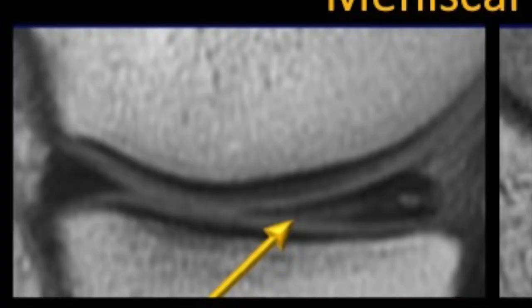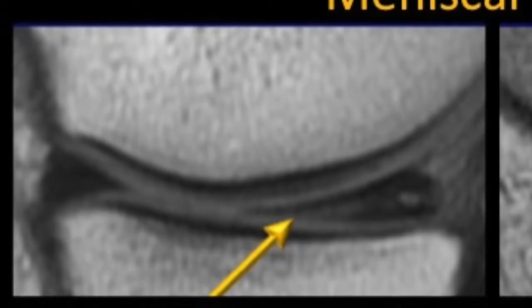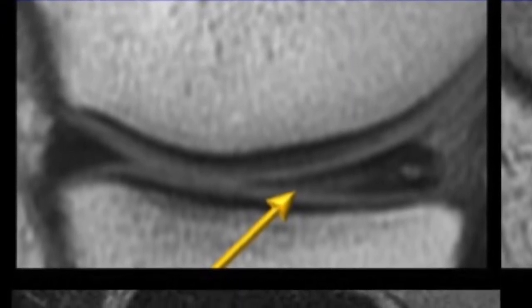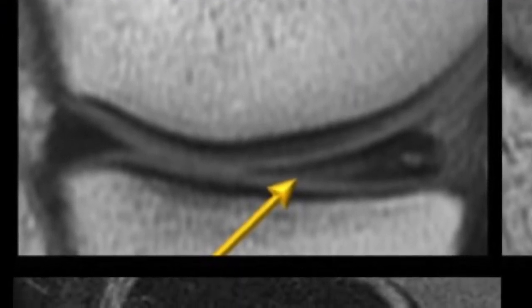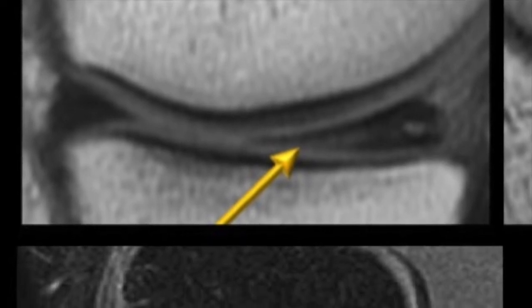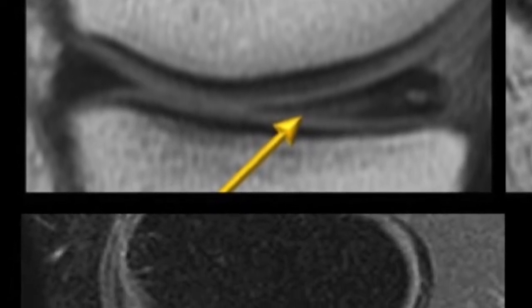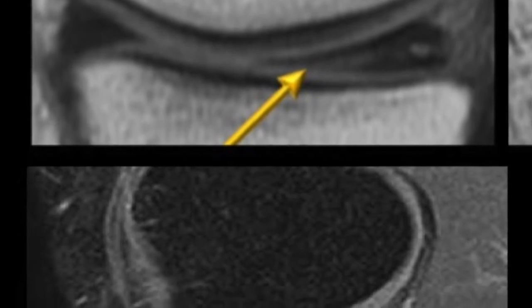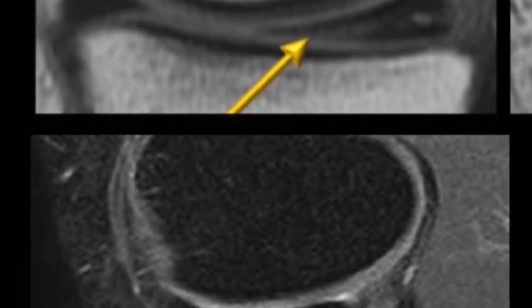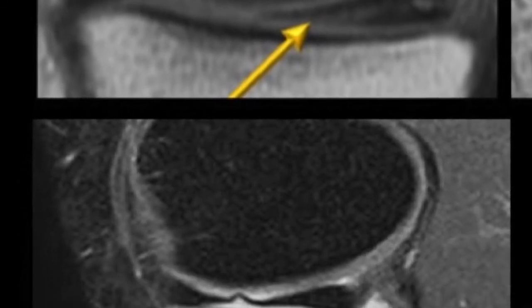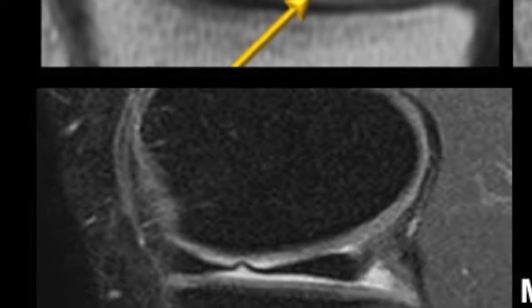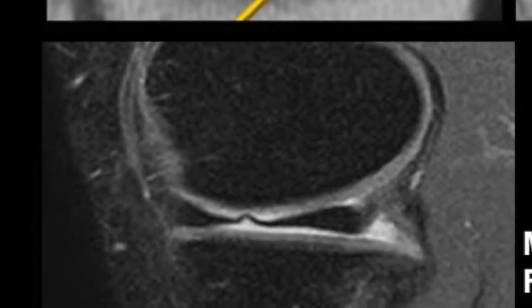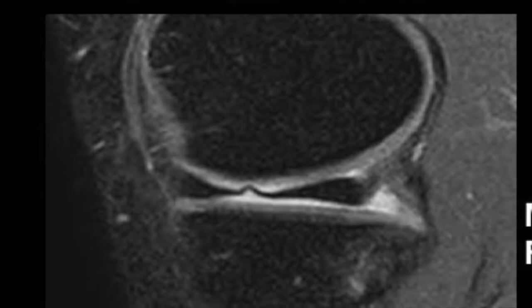Intact meniscus on MR images are demonstrated as a low signal intensity structure on all sequences — T1, T2, proton density sequences. They look like a triangular structure in cross section with the apex pointing towards the intercondylar notch. Peripherally, the meniscus has a bow tie appearance.